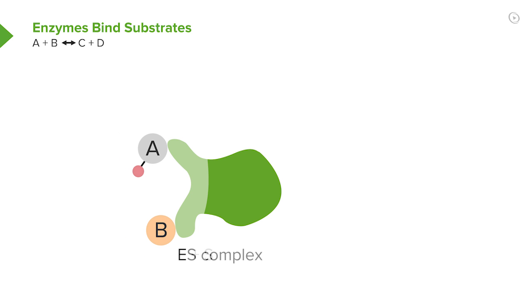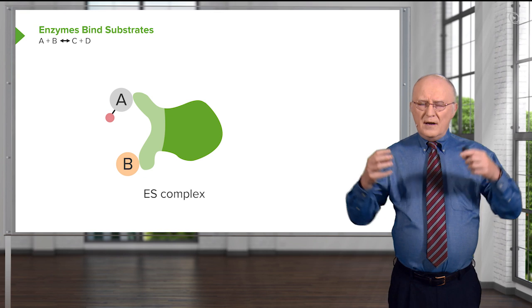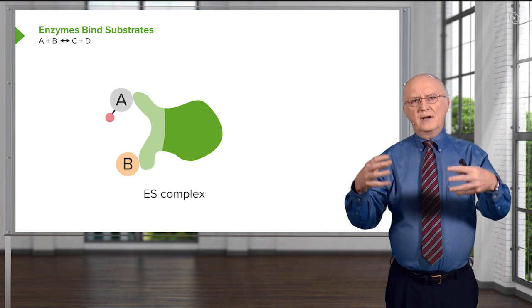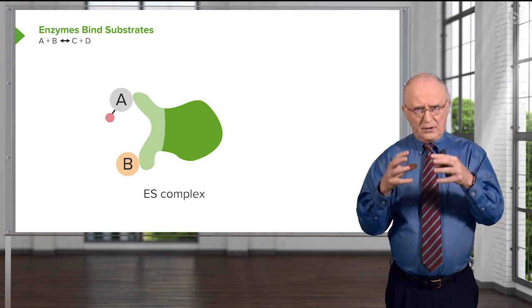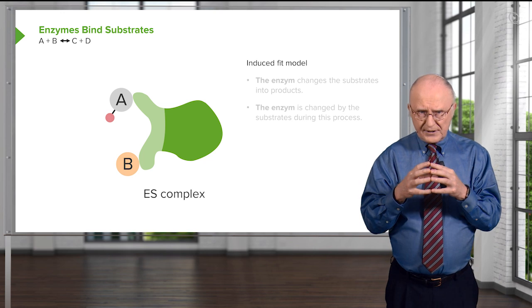We can see here, the substrates have started to bind to the enzyme. We see the enzyme again in green. We see substrate A that has bound the top portion of the enzyme and substrate B that has bound the bottom. Now, the interaction of the substrates with the enzyme will actually cause the enzyme to start to change.